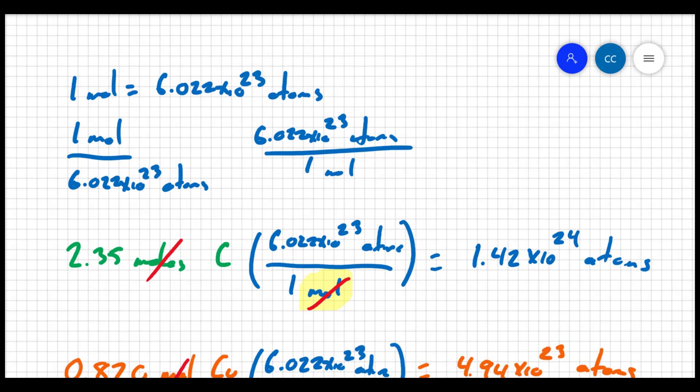One mole is equivalent to 6.022 times 10 to the 23 atoms. And we can write these conversion factors again, 1 mole over 6.022 times 10 to the 23 atoms, or 6.022 times 10 to the 23 atoms for every 1 mole.